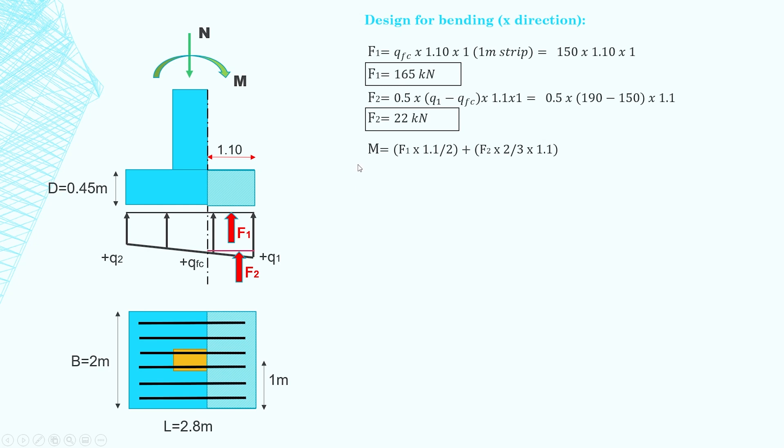So what we have here is M equals F1 times half of 1.1 plus F2 times two thirds of 1.1. That's because F2 is inside a triangle. So it's two thirds of this height. The moment works out to be 107 kilonewton meters per width of footing. Now I'm going to work out the area of steel required by using this simplified formula. So we need to find the steel reinforcement required to withstand this bending moment that we just found here. You can use whatever formula your code suggests to design the steel reinforcement. It's the same formula for beams.